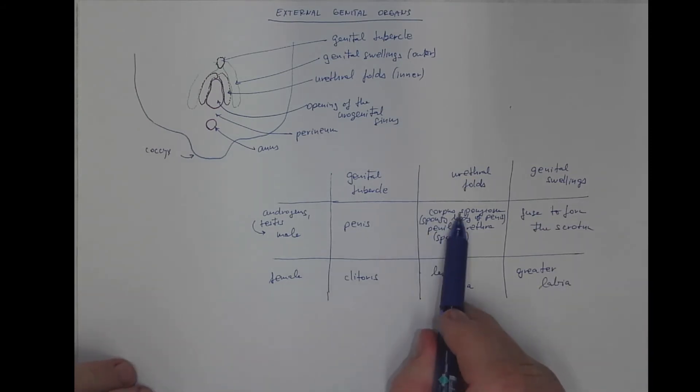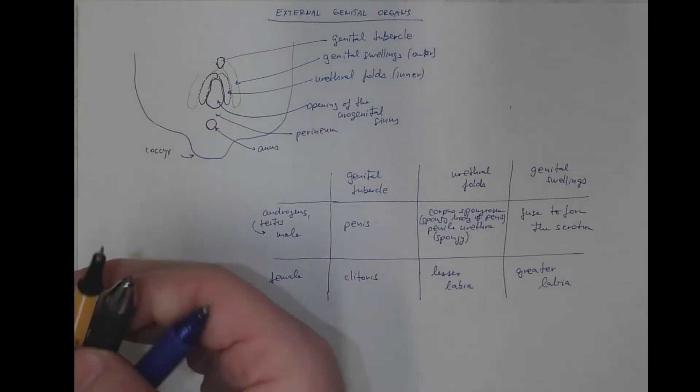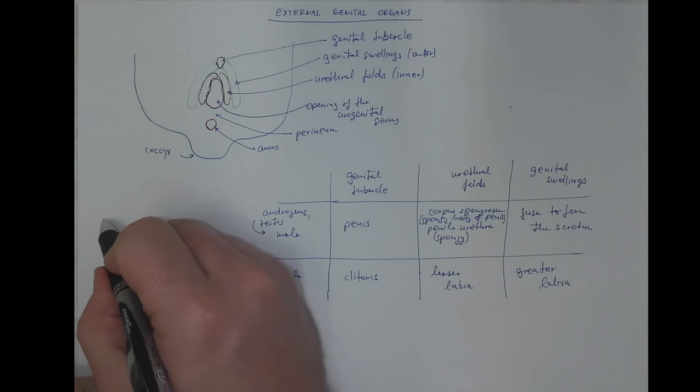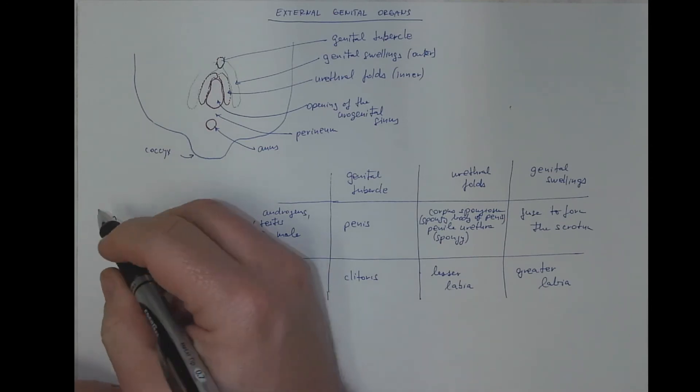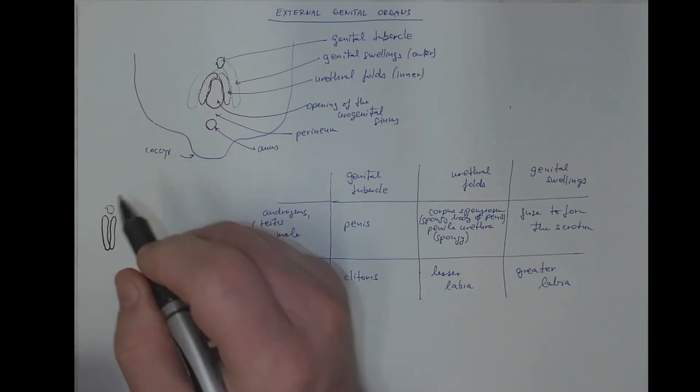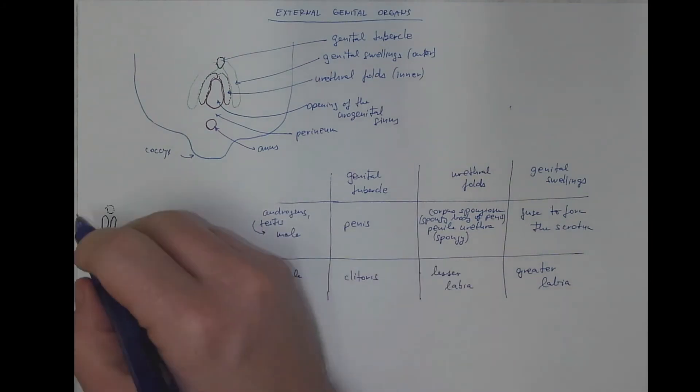Regarding closure of the spongy body and penile urethra, one more scheme shows the frontal view of urethral fold closure. They will close in the midline and fuse together. Here will be the genital tubercle, also in male embryos.